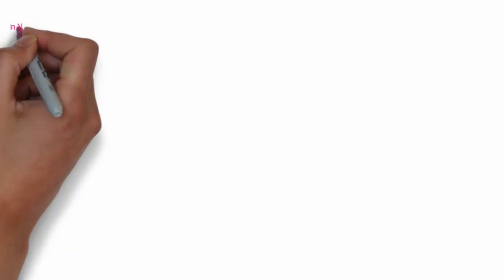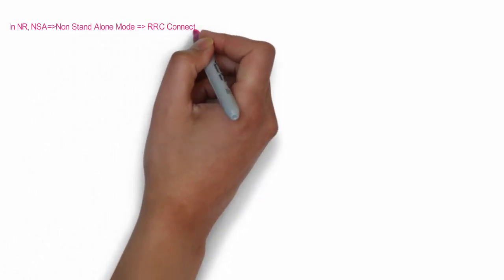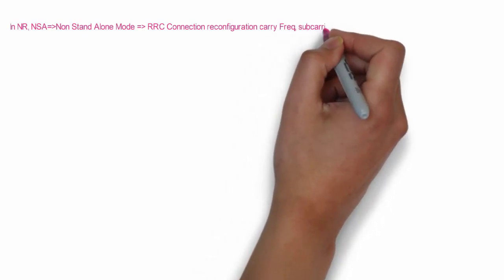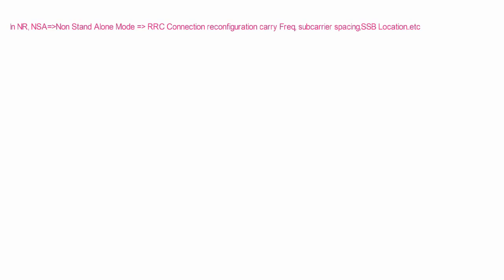We are talking about NR. In NR, the cell search process in non-standalone mode and standalone mode is different. When NR is activated in non-standalone mode, UE doesn't need to do a blind search for SSB, since the frequency, subcarrier spacing, etc. are all configured by LTE in the RRC connection reconfiguration message. This video focuses only on the standalone mode case. In NSA mode, because all information about frequency and subcarrier spacing is available in the RRC reconfiguration message, there is no need to do a blind search.